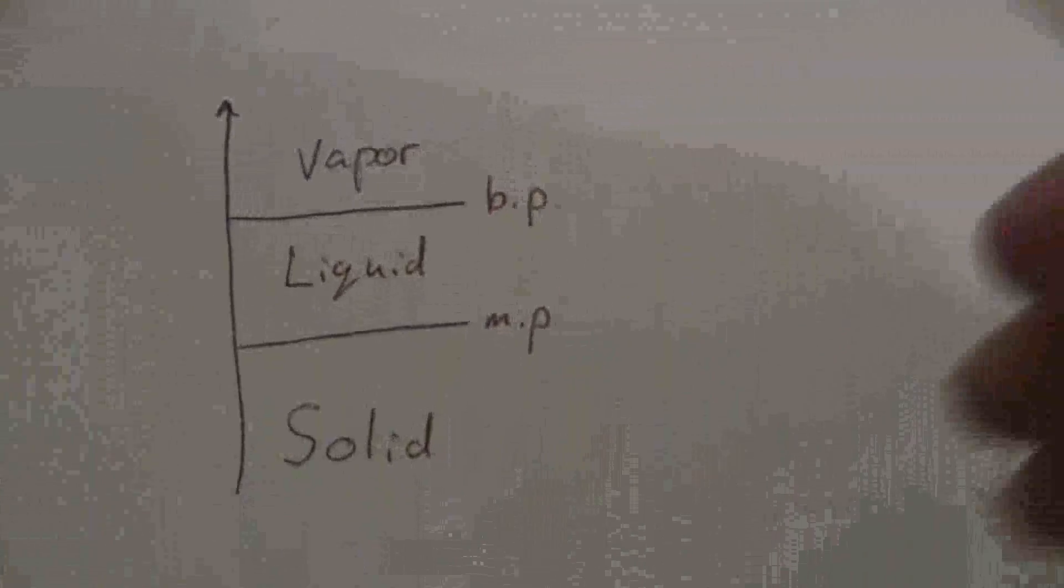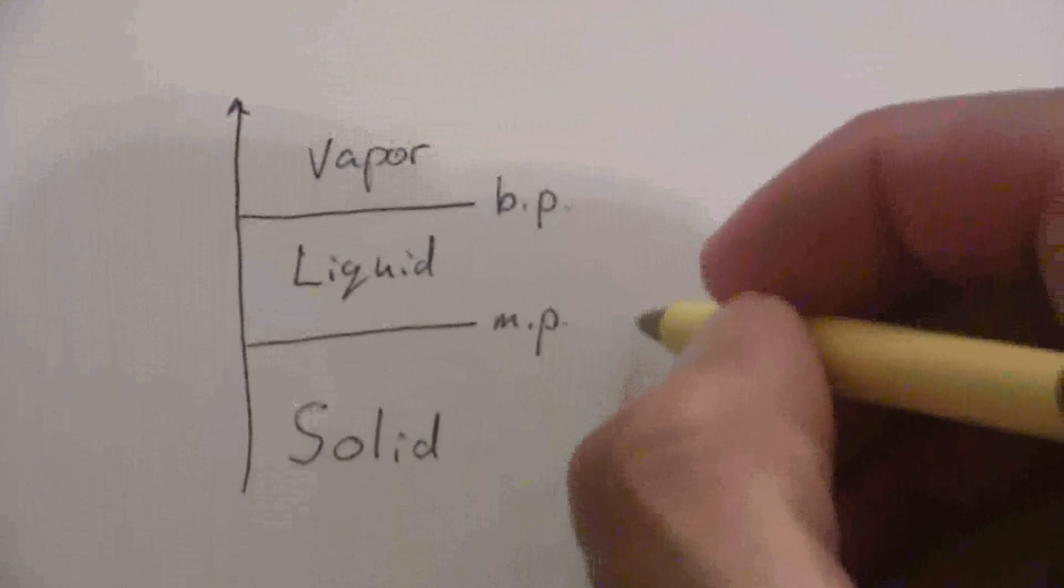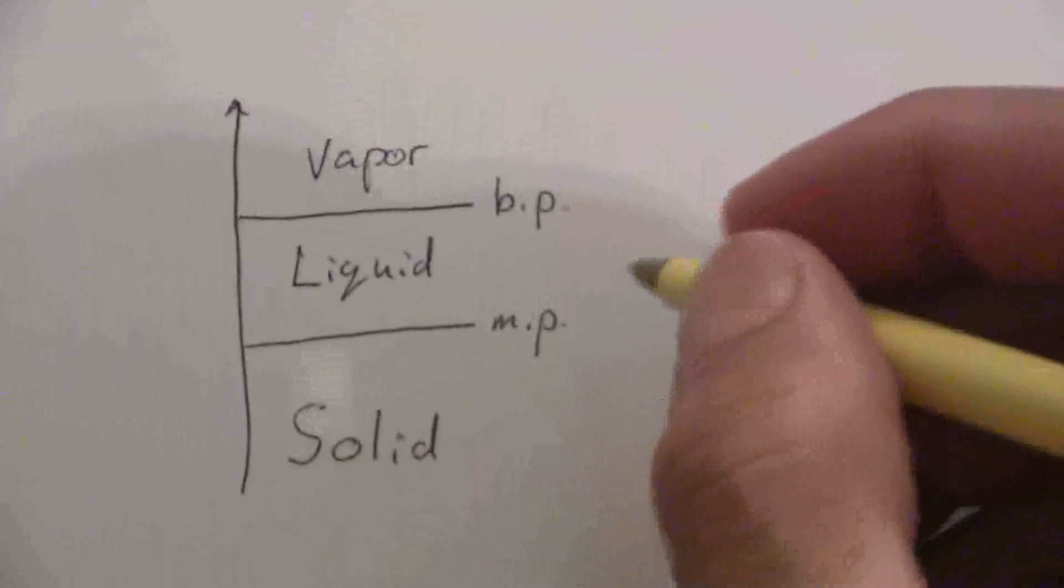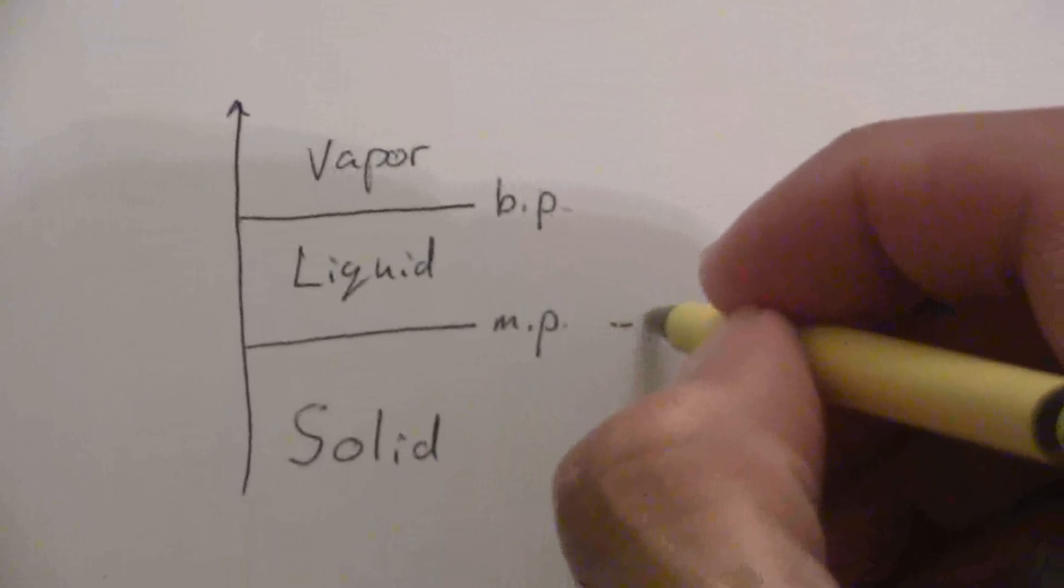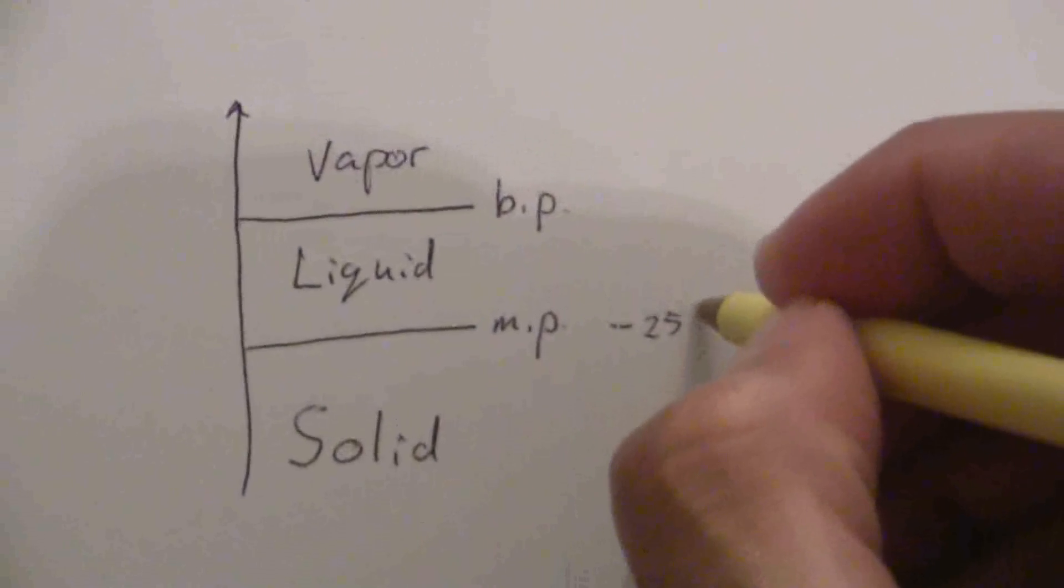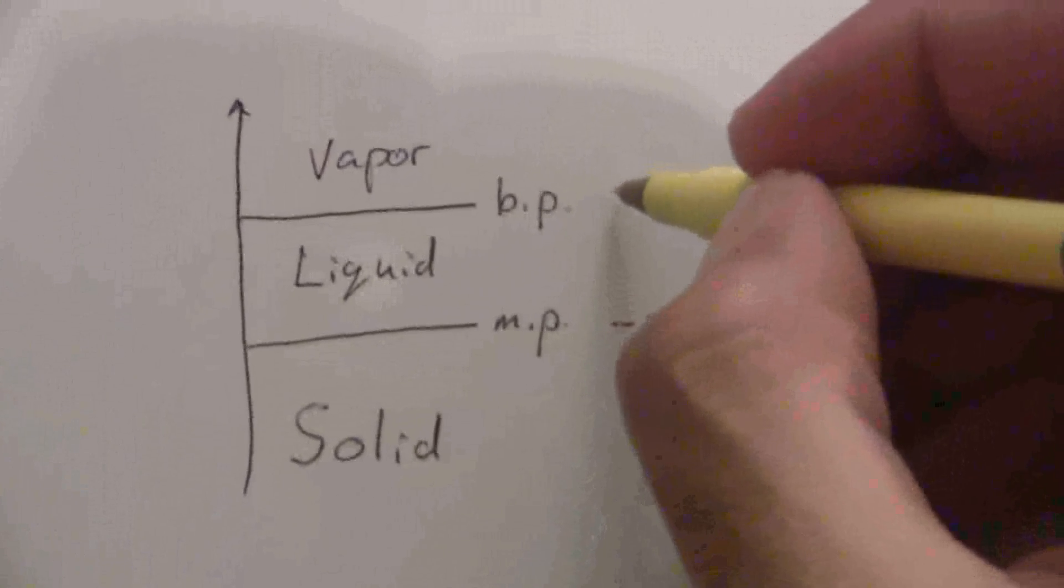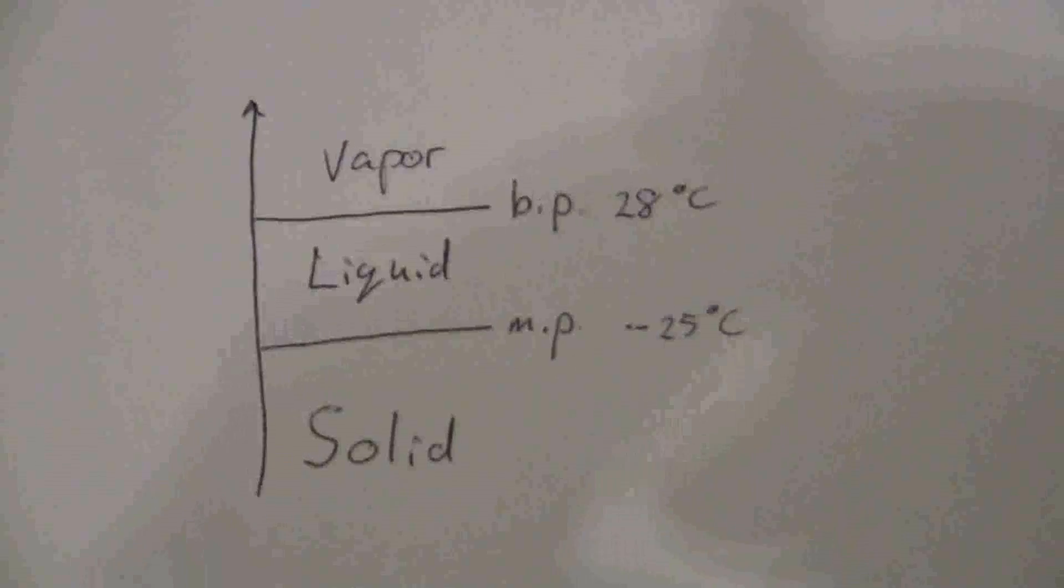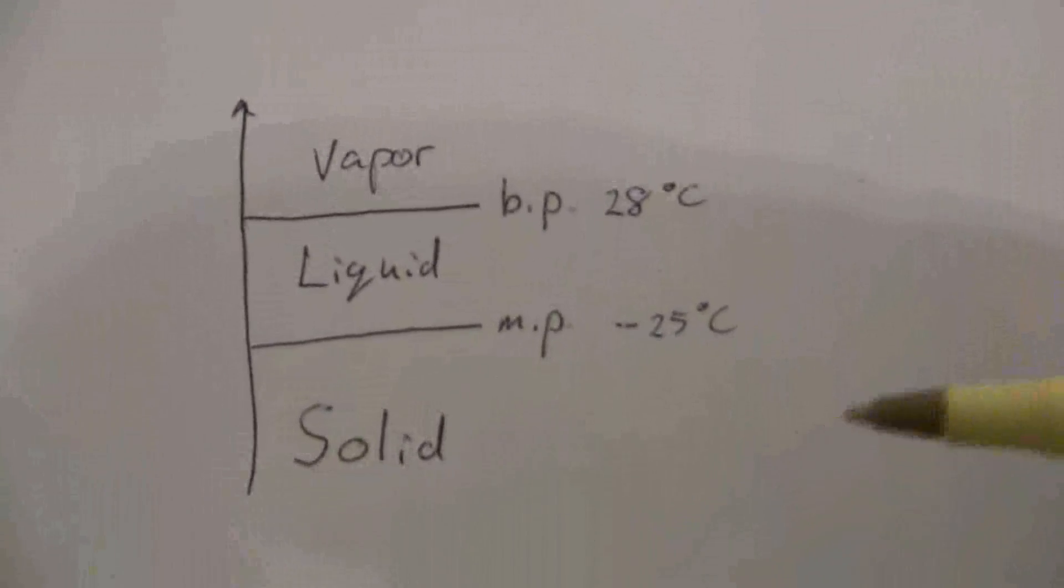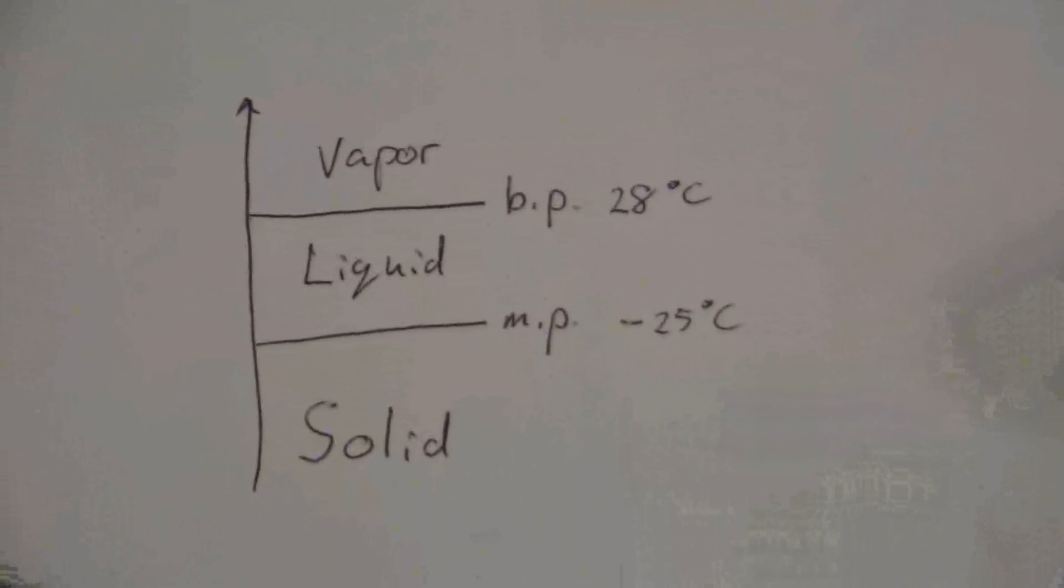So let's just look at an example. Say we have a substance and its melting point is negative 25 degrees C, and its boiling point is 28 degrees C, positive. So at 35 degrees C, what state of matter is it going to be in?